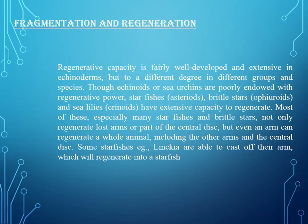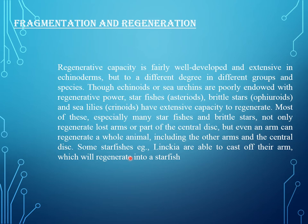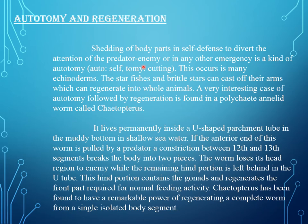Fragmentation and regeneration. Regeneration capacity is fairly well developed and extensive in echinoderms, though to different degrees in different groups. Sea urchins are poorly endowed with regenerative power. Starfishes, brittle stars, and sea lilies have extensive capacity to regenerate. Most of these, especially many starfishes and brittle stars, not only regenerate a lost arm or part of the central disc, but even an arm can regenerate a whole animal, including the other arms and the central disc. Some starfish, for example Linckia, are able to cast off their arms which will regenerate into a new starfish.